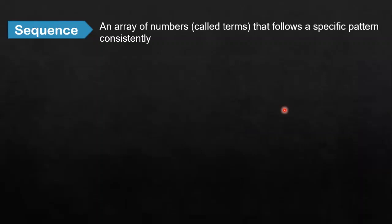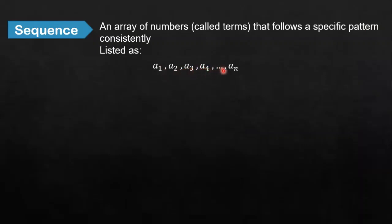And this pattern can be identified using a certain formula. This sequence can be listed in this form: a_sub_1, a_sub_2, a_sub_3, a_sub_4, and so on and so forth until it reaches a_sub_n. The terms are separated by commas, and you can see the ellipses to denote that the array is consistently following until it reaches the last term.